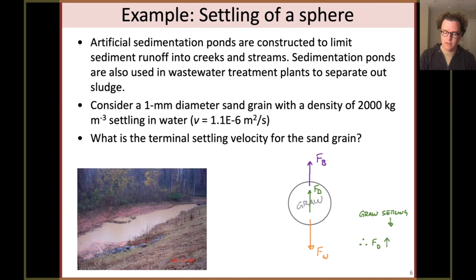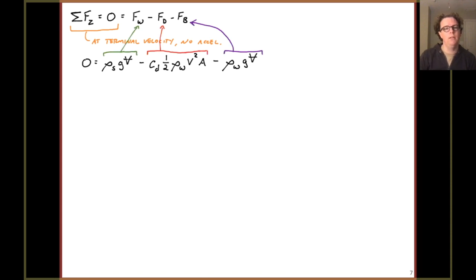The grain is settling down, therefore the drag is acting up. Let's write out our force balance in the vertical. So the sum of the forces is zero, the weight force minus the drag minus the buoyancy. And again, just to underscore here, at terminal velocity, there is no acceleration. That's how we get sum of the forces equals zero. So let's go ahead and write in what we know. The first term I've written in, highlighted with the green, is weight. So mass times acceleration, or density times volume, and then acceleration due to gravity, g.